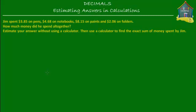Welcome to homecampus.com.sg. Let's learn how to estimate answers when you're doing operations on decimal numbers. We have a word problem which says that Jim spent $3.85 on pens, $4.68 on notebooks, $8.15 on paints, and $2.06 on folders. How much money did he spend altogether? Estimate your answer without using a calculator, then use a calculator to find the exact sum of money spent by Jim.